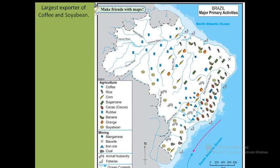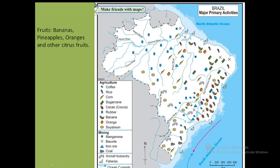Brazil is famous for coffee and exports it to various parts of the world. Along with coffee, Brazil also exports soya bean on a large scale. The major coffee growing states are Minas Gerais and São Paulo. We also find fruits like bananas, pineapples, oranges and other citrus fruits grown in Brazil.